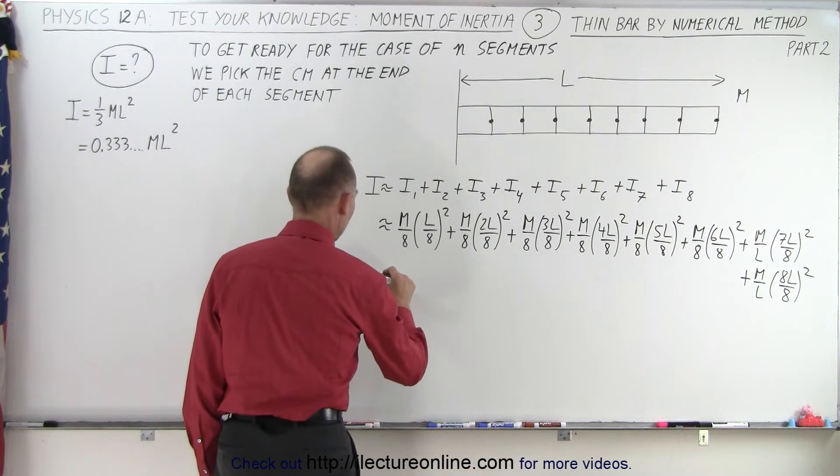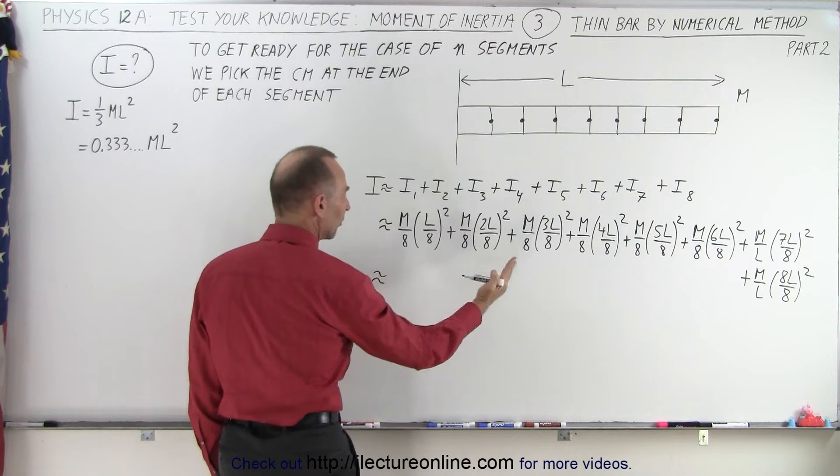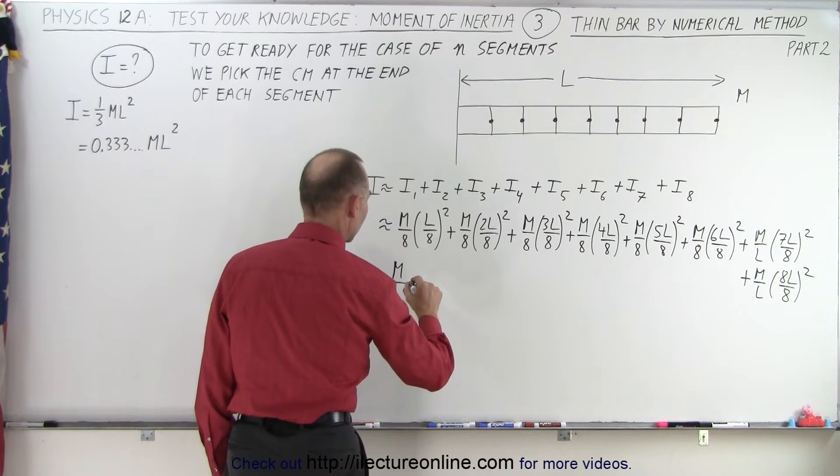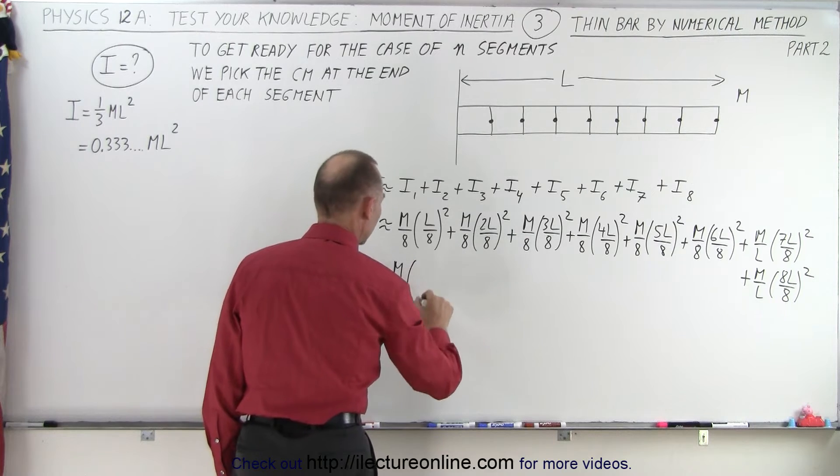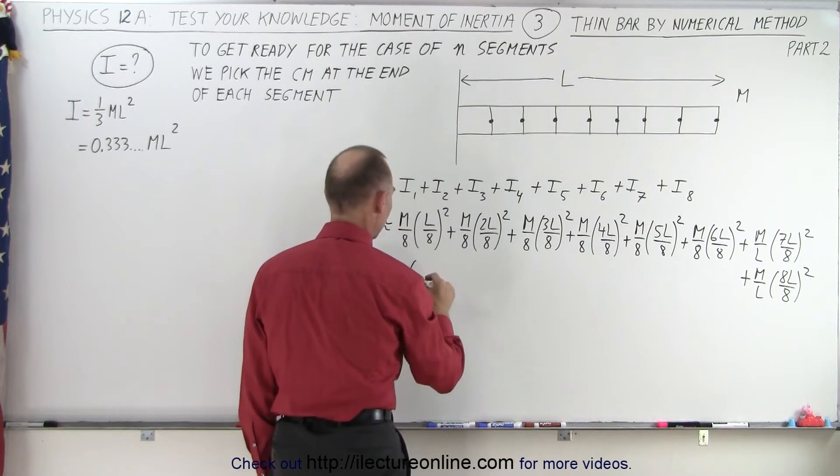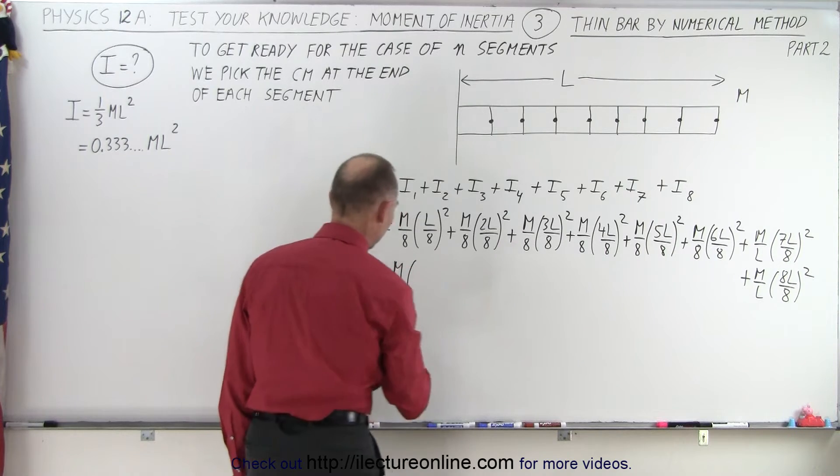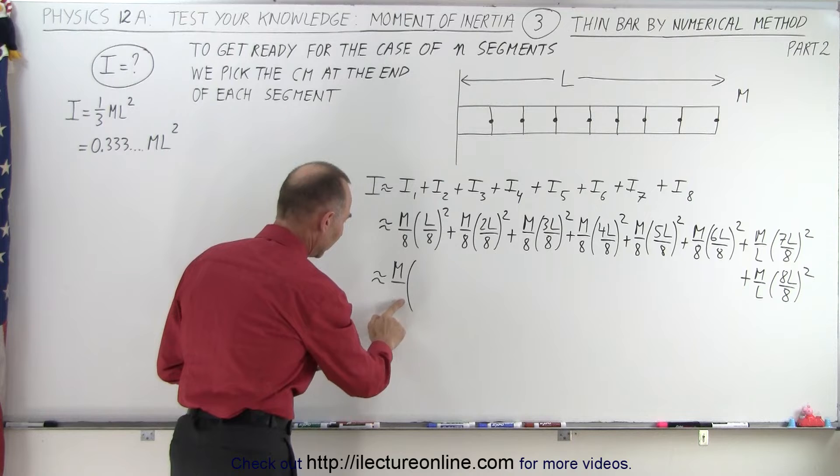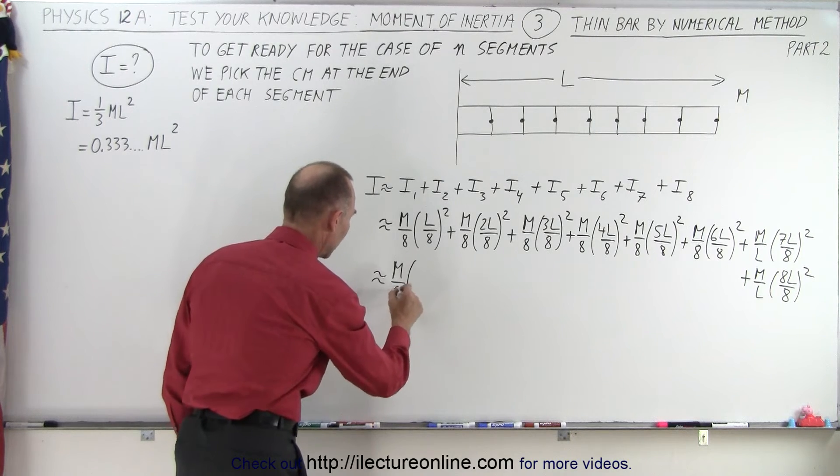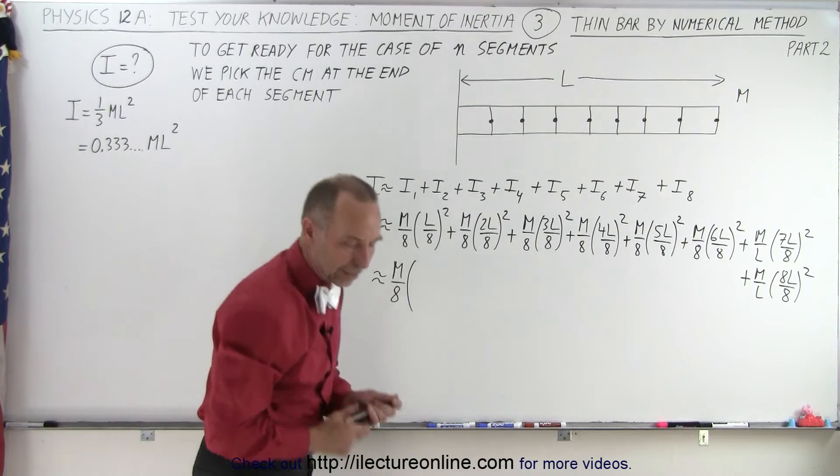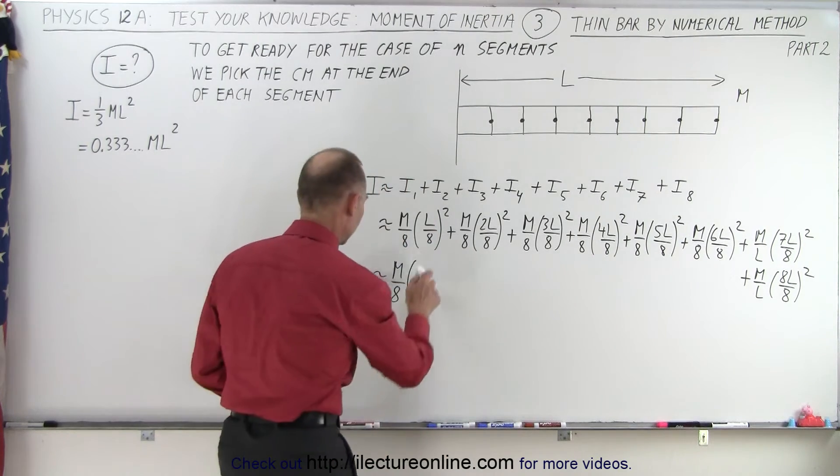So we can then say that this is approximately equal to—we can factor out an m over 8 for all of them, m over 8 times... now we can add up all the numerics squared, so that would be, well actually, let's see, no, it's not m over l, it's m over 8, so we factor out an m over 8, and matter of fact, I can do better than that. Let's start over again.